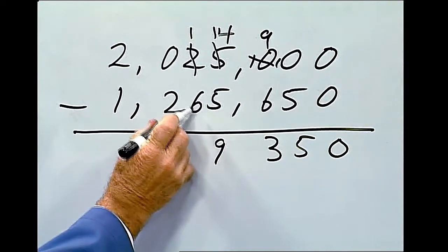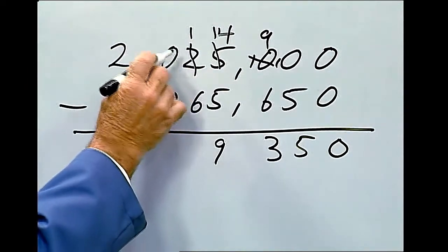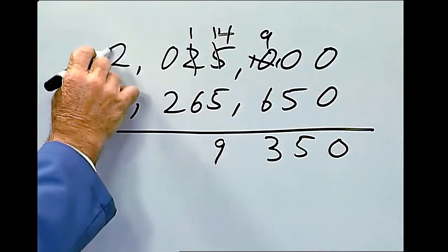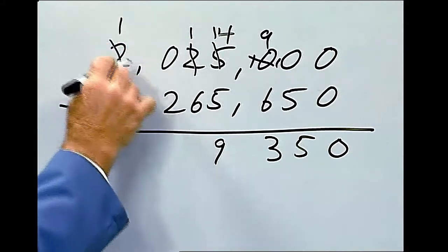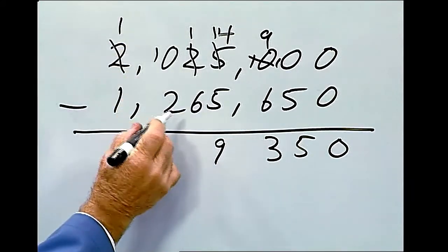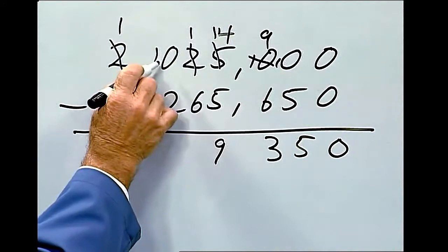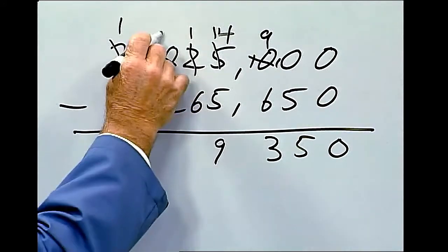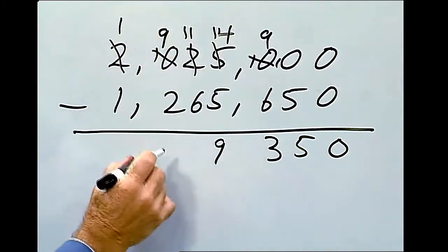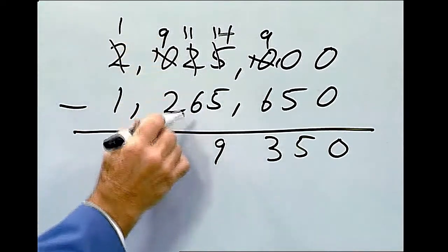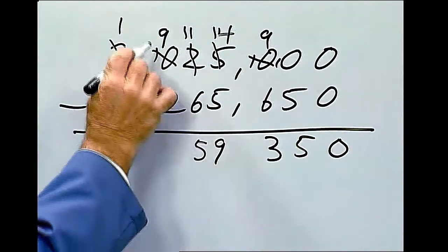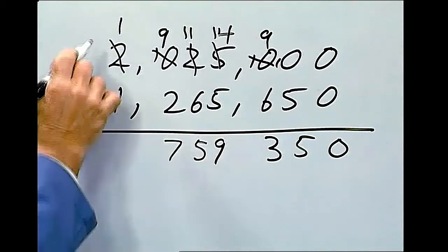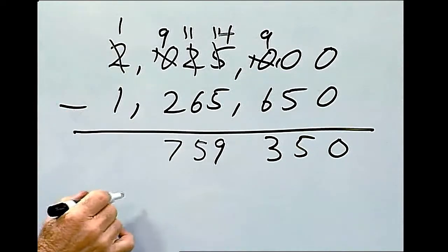We can't take 6 from 1, so we have to borrow from the next number. We can't, so we have to borrow from the millions column. Now we can borrow from the hundred thousands column. Makes that a 9, this makes that an 11. 11 minus 6 is 5. 9 minus 2 is 7. And 1 minus 1 is 0.